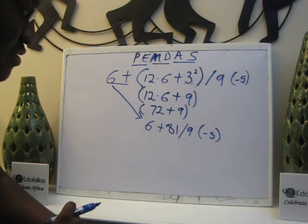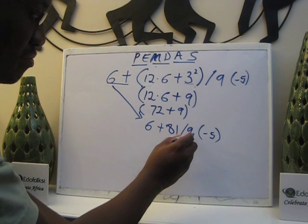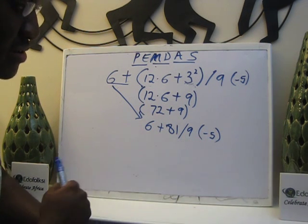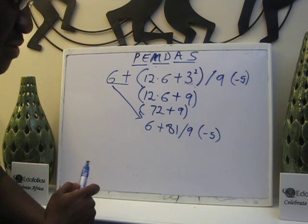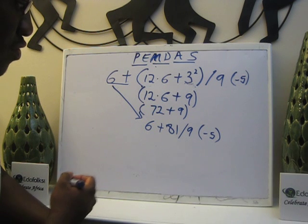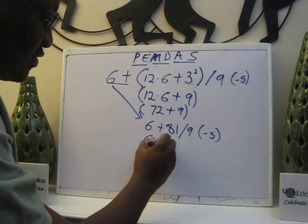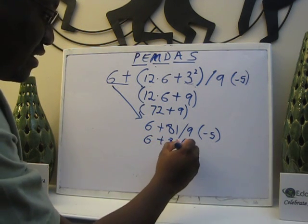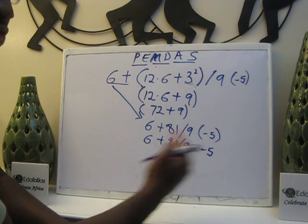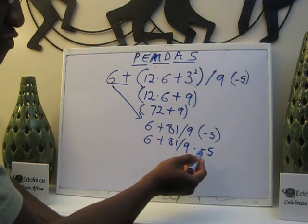What do I do next? I have a division here and a multiplication here. Whenever you see a number in brackets or parenthesis, it's a multiplication. So we now have 6 plus 81 divided by 9 times negative 5. Always do left to right, so division comes before multiplication.